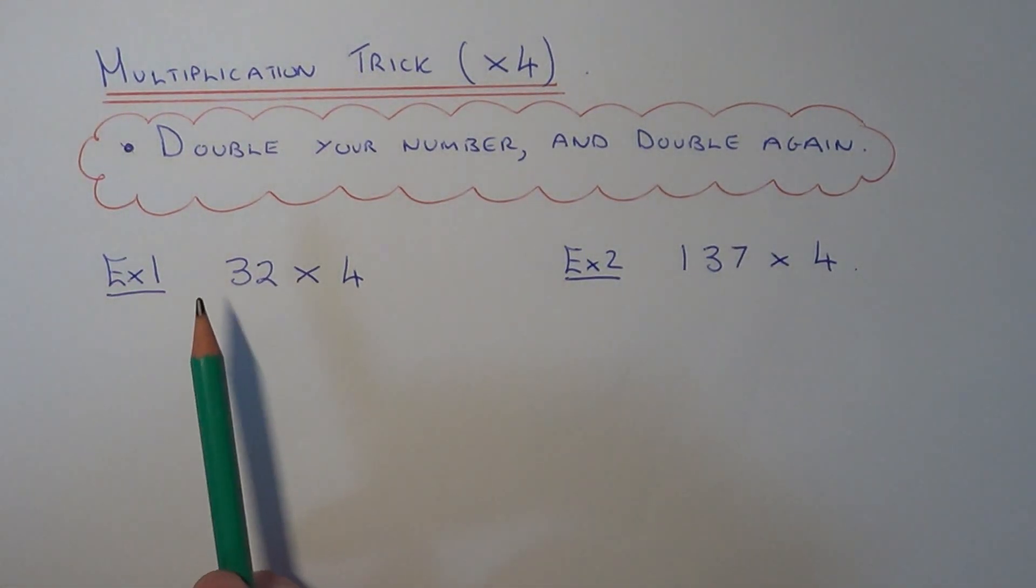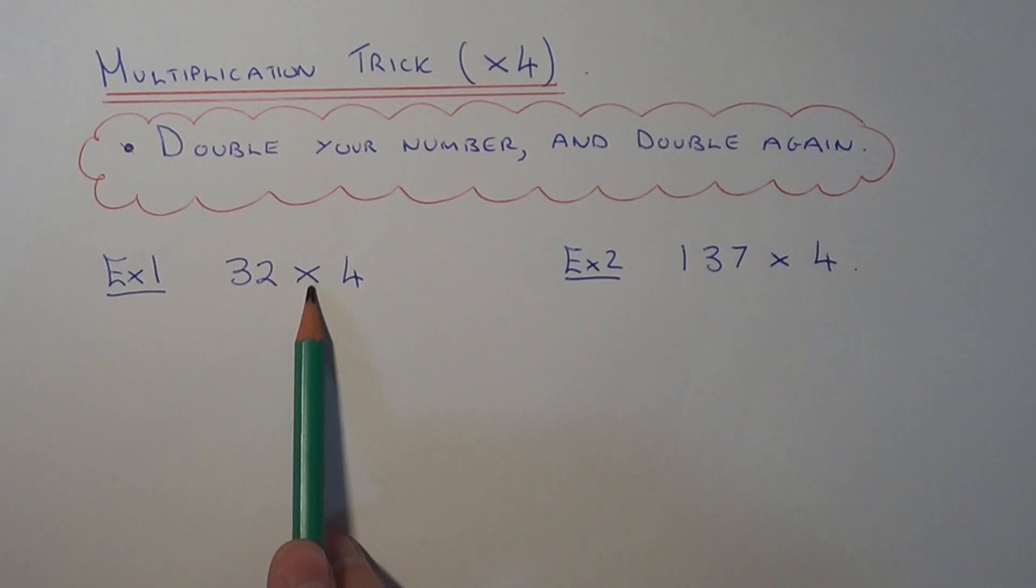So let's apply this to the two examples that we have here. First of all then we need to work out 32 times 4.